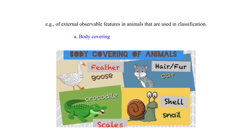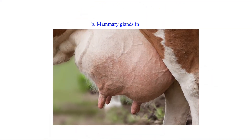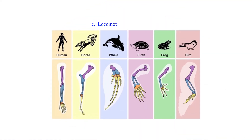Examples of external observable features in animals used in classification include: A) body covering — e.g., scales, fur, hair, or feathers; B) mammary glands in mammals; and C) locomotory structures.